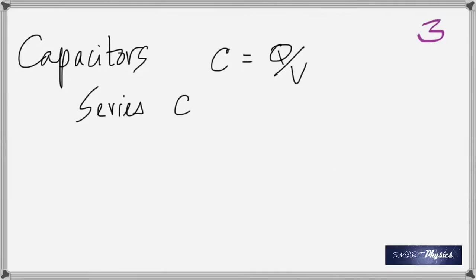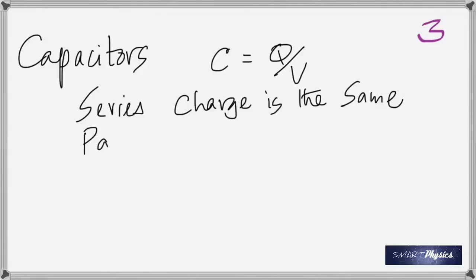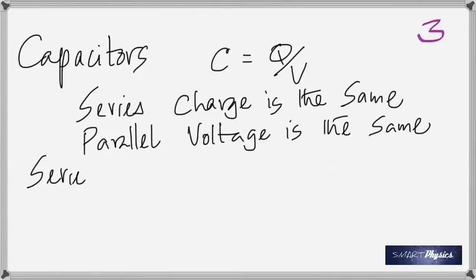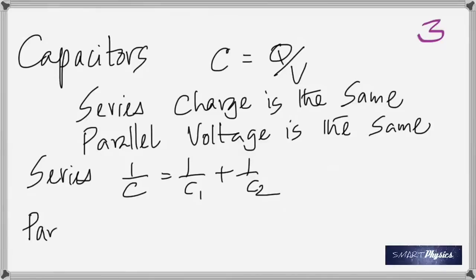When you connect capacitors in series, the charge stays the same. In parallel, the voltage stays the same. For parallel, the total capacitance is just the sum: C_total = C1 + C2. For series: 1/C_s = 1/C1 + 1/C2.